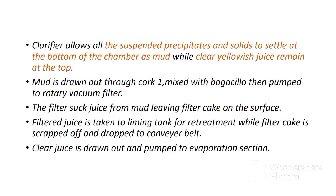Flocculants aid the flocculation and sedimentation process to prevent churning of juice. The clarifier allows all suspended precipitates and solids to settle at the bottom of the chamber as mud, while clear yellowish juice remains at the top. Mud is drawn out, mixed with bagasse fines, then pumped to a rotary vacuum filter. The filter extracts juice from the mud, leaving filter cake on the surface. Filtered juice is taken to the liming tank for retreatment, while filter cake is scraped off and dropped to a conveyor. Remember, filter cake is used as manure in the field. Clear juice is drawn out and pumped to the evaporation section. This juice should be free from suspended solids and should have a pH of around 7.0 to 7.4.